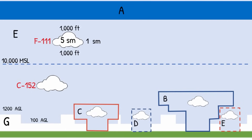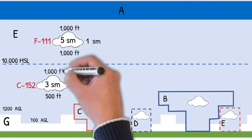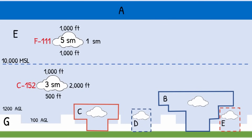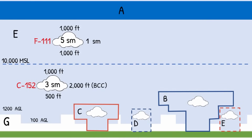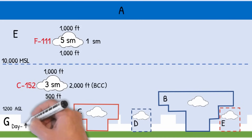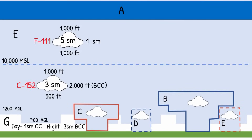Below 10,000 feet MSL is where we get Cessna 152. This applies to all controlled airspace below 10,000 feet MSL, with one exception we'll talk about in a minute. Below 10,000 feet, you're required to maintain three statute miles visibility and basic cloud clearance. The C in Cessna 152 — the third letter of the alphabet — helps you remember the three statute miles. Cloud clearance is 500 feet below, 1,000 above, and 2,000 feet horizontal. That's where Cessna 152 comes from. This cloud clearance is referred to as basic cloud clearance. The Class G airspace visibility and cloud clearance requirement during the day is one statute mile, clear of clouds. At night, it's Cessna 152, just like the rest of controlled airspace.